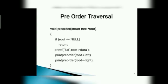Pre-order traversal program: void print_preorder, struct tree star root. If root equals equals null, return. Printf root pointer data. Print_preorder root pointer left. Print_preorder root pointer right. Close brace.